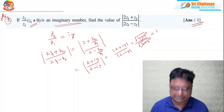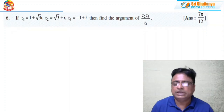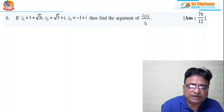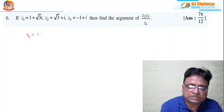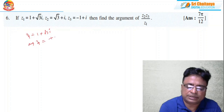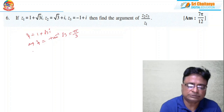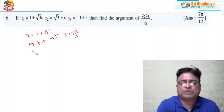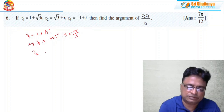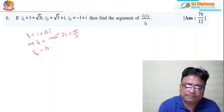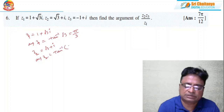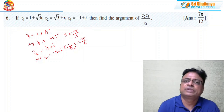Problem 6 is similar. z1 = 1 + √3 i, so argument of z1 = tan⁻¹(√3) = π/3, since both real and imaginary parts are positive. z2 = √3 + i, so argument of z2 = tan⁻¹(1/√3) = π/6. For z3 = -1 + i, I need to find theta = tan⁻¹(|-1|/1).